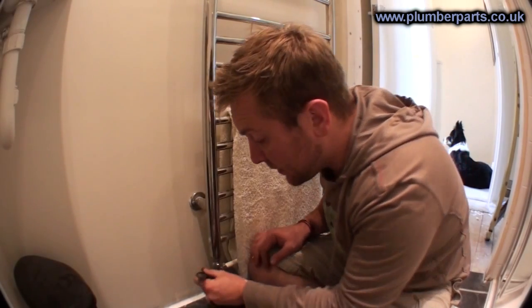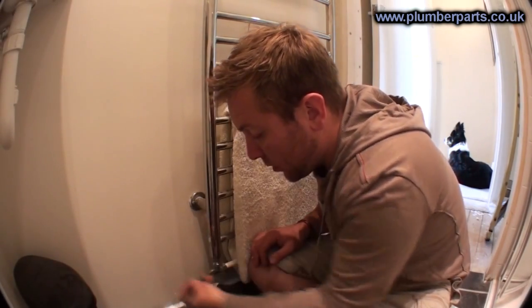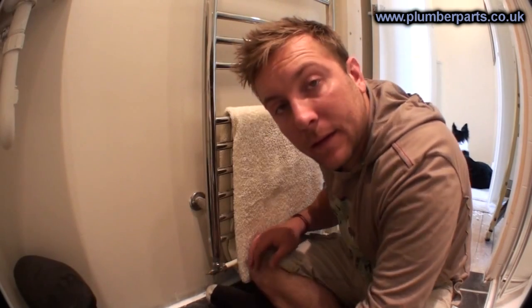Once it's fully closed, just slack it back a quarter of a turn. Do that to each radiator upstairs, and you should find then that the radiator side of the heating system is balanced.